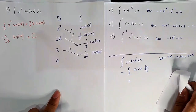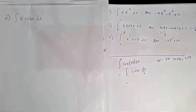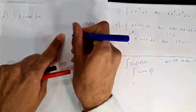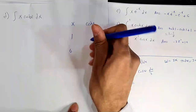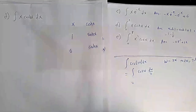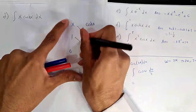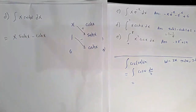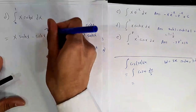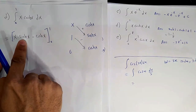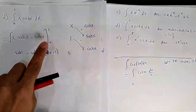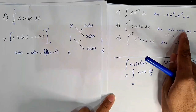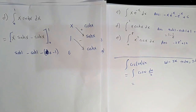Part D: ∫₀¹ x cosh(x)dx using tabular. D-column: x, 1, 0. I-column: cosh(x), sinh(x), cosh(x). Signs: +, −. Answer: x sinh(x) − cosh(x). Evaluate from 0 to 1: [1·sinh(1) − cosh(1)] − [0 − cosh(0)] = sinh(1) − cosh(1) + 1. Using the definitions of sinh and cosh, this equals 1 − 1/e. This is the end of section 7.1.